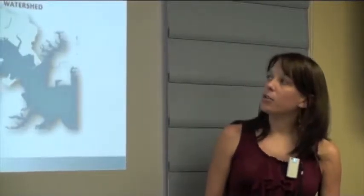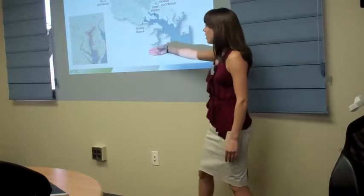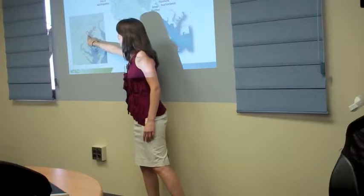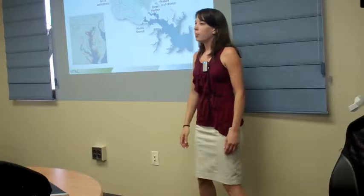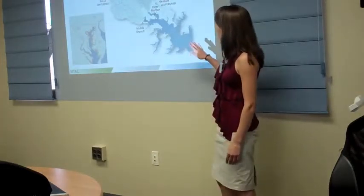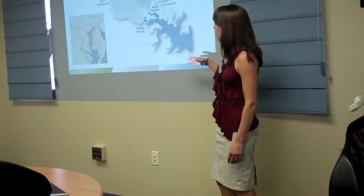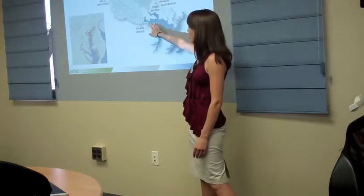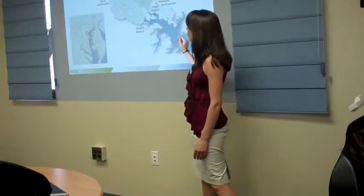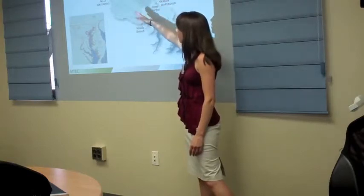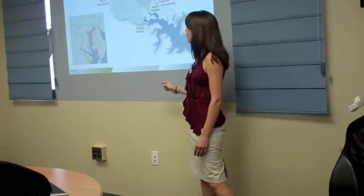So to orient you to where we're talking about: this inset map shows the Chesapeake Bay, the state of Maryland, and the Patapsco River. Right now we're just south of here. The Patapsco River is a tidal tributary to the Chesapeake. The study site that we looked at is at the top of the tidal portion of the Patapsco, and the two major river systems are the Jones Falls Creek and the Gwins Falls Watershed Creek. You can see the streams that come down those watersheds.